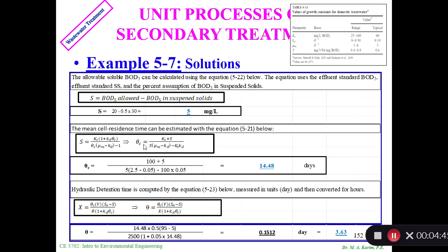We'll be using the Excel spreadsheet. I input the data already. S using equation 5-22: S equals BOD5 allowed minus BOD5 in the suspended solid. S equals 20 minus 50% of the suspended materials. The suspended materials allowed is 30, so I got 5.